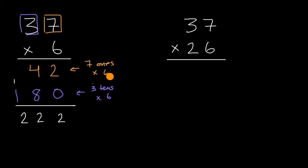One way to think about it is you could view this as 37 twenty-sixes, or as 37 sixes plus 37 twenties. First we can do the 37 sixes, which is exactly what we did before. Let's first think about 30 sixes, so we're going to multiply 30 times six.